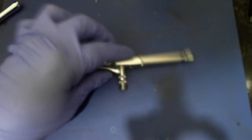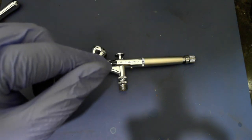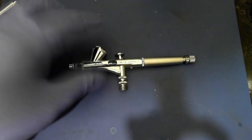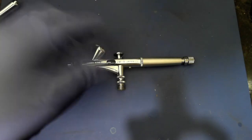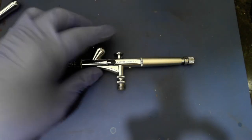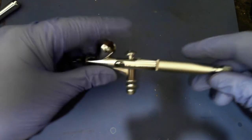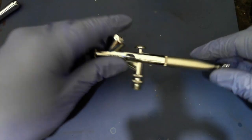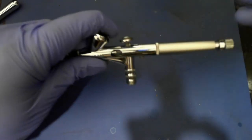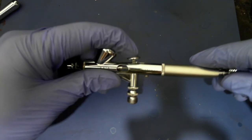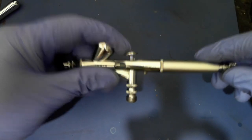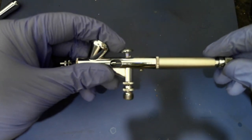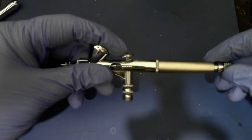The second type is the double action airbrush. Double action airbrushes utilize a two-step trigger which provides the artist with considerably more control over the airbrush output. Like single action airbrushes, the downward trigger movement starts the airflow, but the paint flow starts with the movement of the trigger backwards, like this.